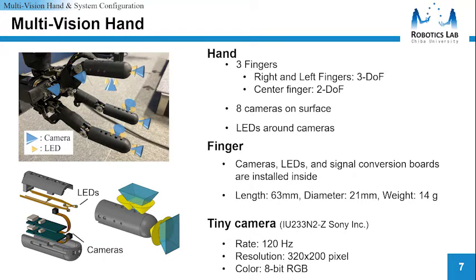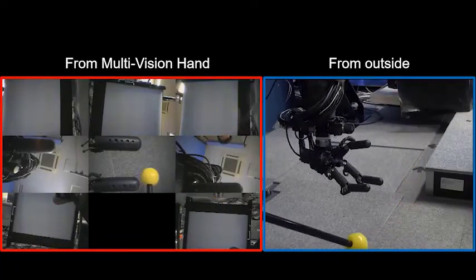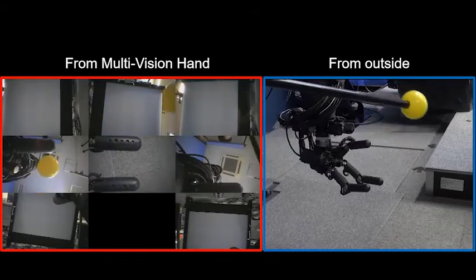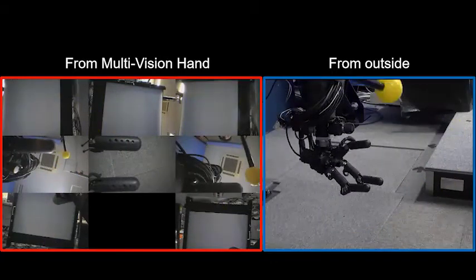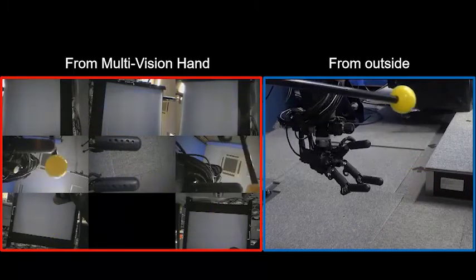The camera used is the IU233N2Z developed by Sony Inc. They are very small with dimensions 2.6 x 3.3 x 2.32 mm. They can output 120Hz for 320 x 200 pixel 8-bit grayscale images. This video was shot by the multi-vision hand. In the video, moving the yellow ball around the multi-vision hand, you can see that there are almost no blind spots around the hand.